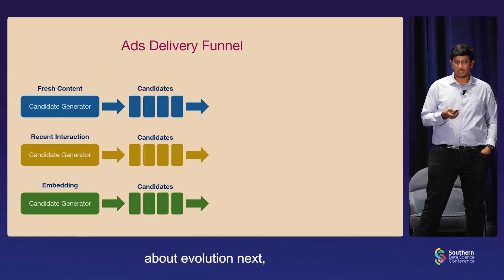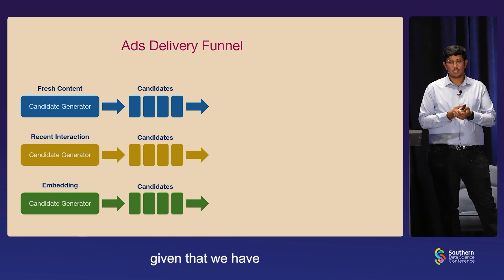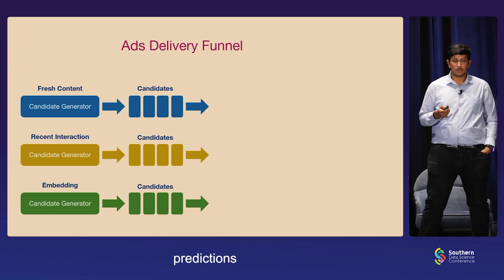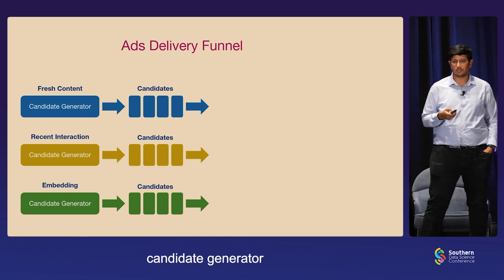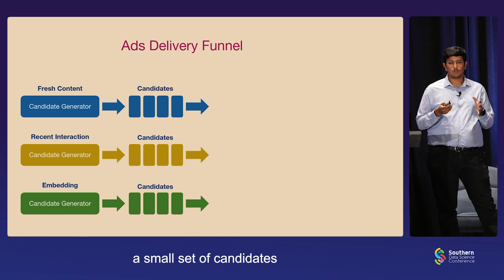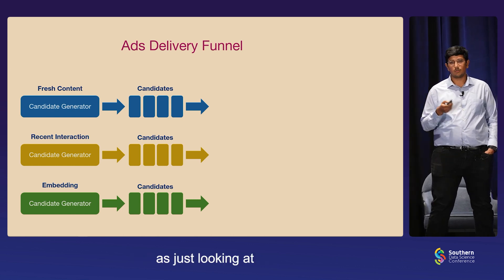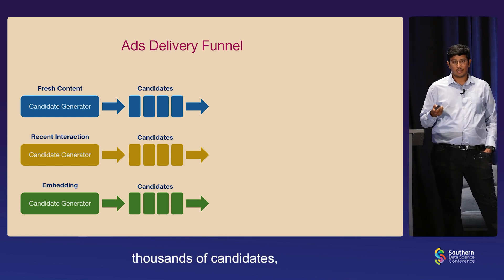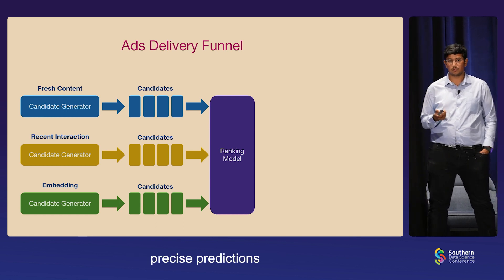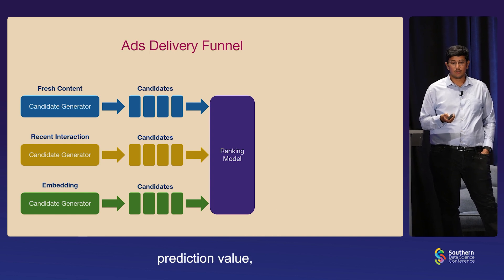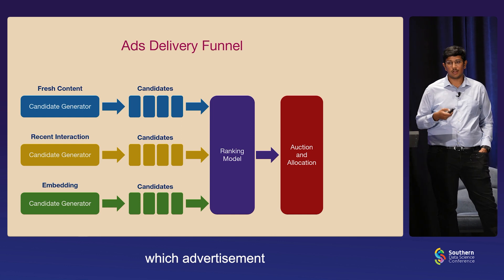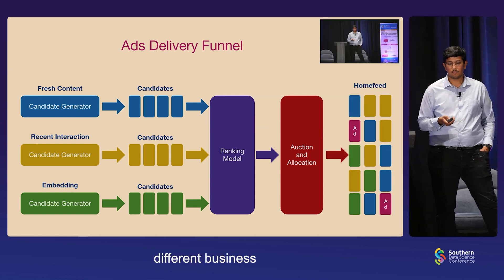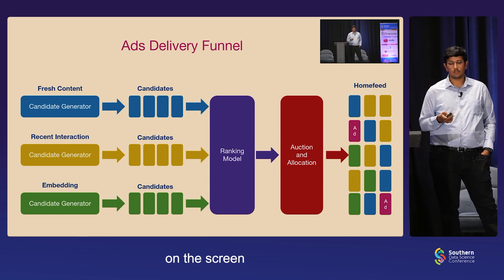Let's also see a high-level overview of what the ads delivery funnel looks like. Given that we have millions of content to show a user at a particular time, understanding the context the user is in is needed to make performance predictions. In every typical recommendation system, it's a tiered system. There are candidate generators which sift through millions of pins to create a small set of candidates for precise predictions — looking at fresh content, users' recent interactions, or embedding-based generators. Once narrowed down from millions to thousands of candidates, these are passed to a ranking model which generates precise predictions. Once we have a prediction value, there's a logic to combine these prediction values to understand which advertisement is most beneficial for Pinterest, our users, and the advertisers. Then coupled with different business logics like diversity, spacing, and pacing, these are finally rendered on the screen to give the best experience.